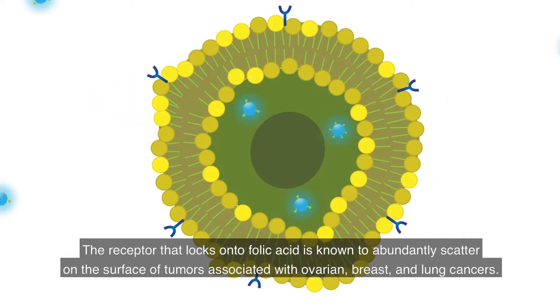The receptor that locks onto folic acid is known to abundantly scatter on the surface of tumors associated with ovarian, breast, and lung cancers.